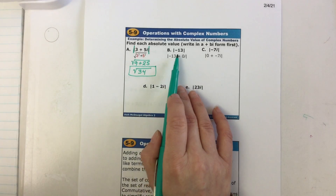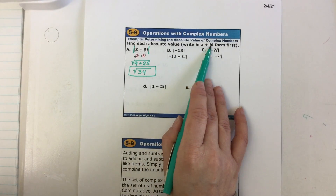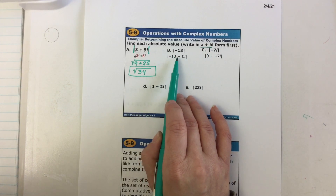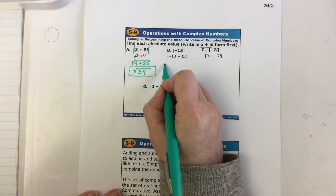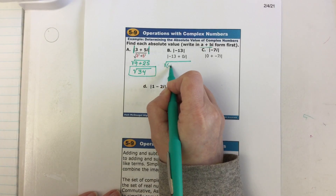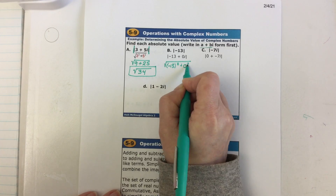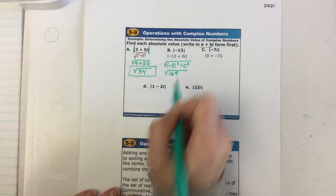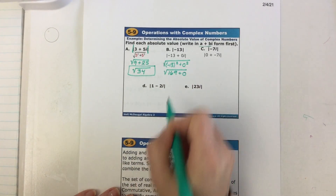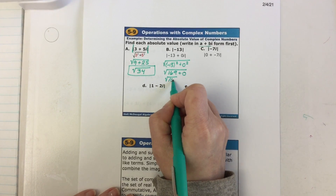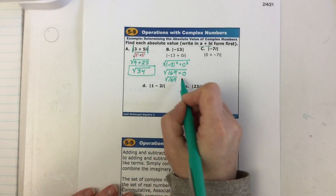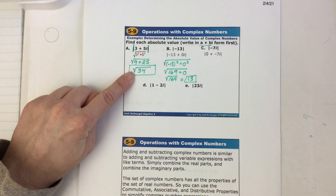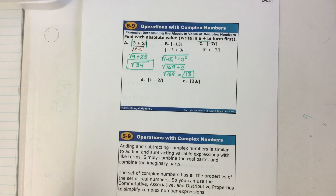Now this one — notice we have just a real number. You have to write it in complex number form first, so I need to add 0i. Underneath the square root: take the real number squared plus the imaginary number squared. Negative 13 times negative 13 is 169; zero times zero is zero. The square root of 169 plus zero is just the square root of 169, which is 13. So sometimes your solution will be a square root, sometimes it will be an integer — totally fine.